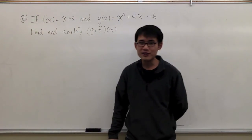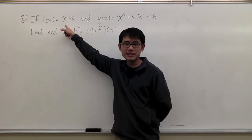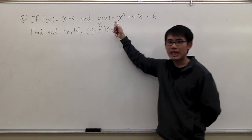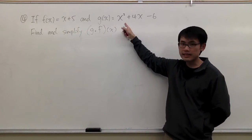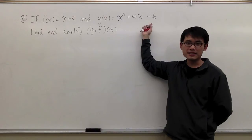For question number 4, we have two functions: f is equal to x plus 5, and we also have g is equal to x squared plus 4x minus 6.